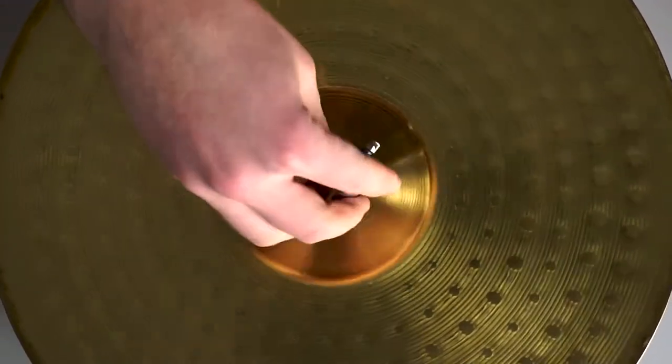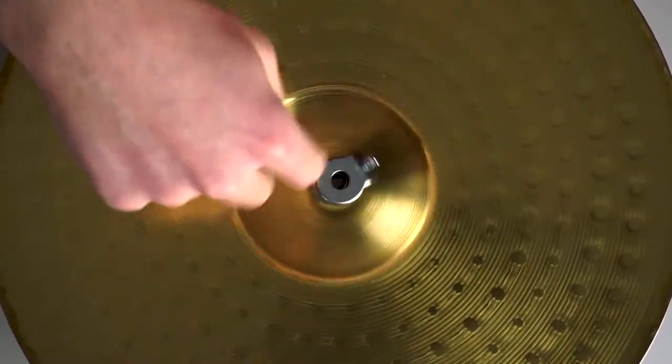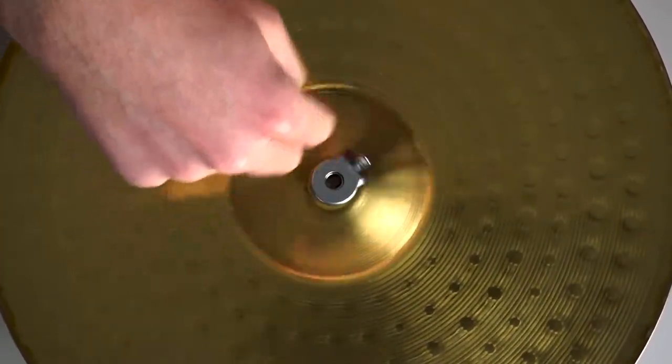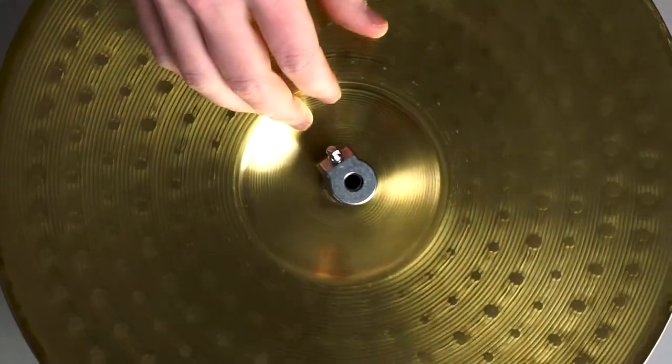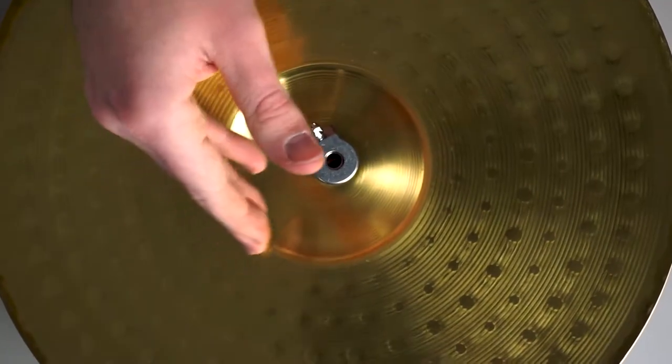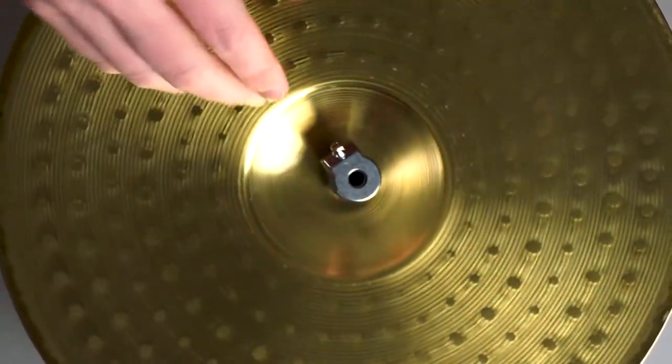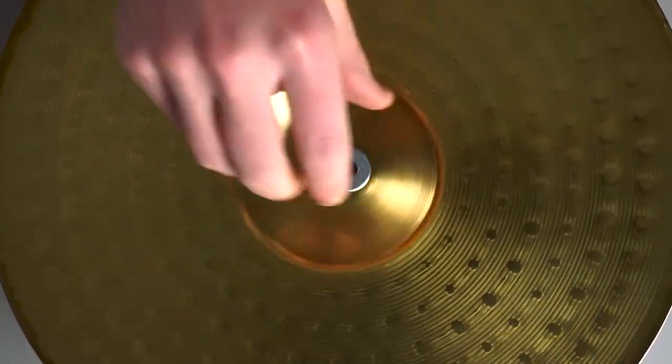Now we're going to take our bottom screw and screw it on. Some will actually screw all the way on and stop, and that'll tell you how far you need to go. Mine that I'm using right now actually does this, and then others can actually keep screwing up the bar, but I recommend putting it about halfway up the tube of the hi-hat clutch.